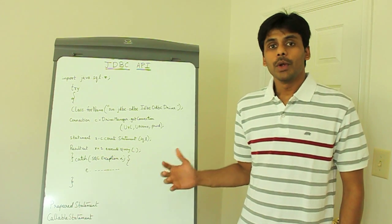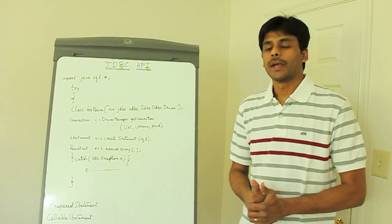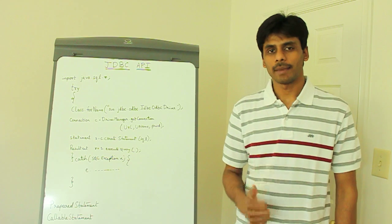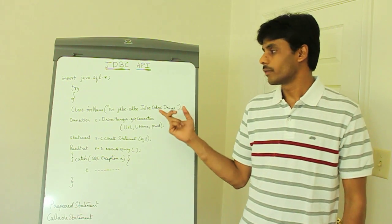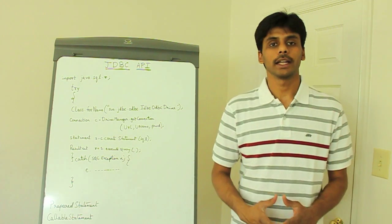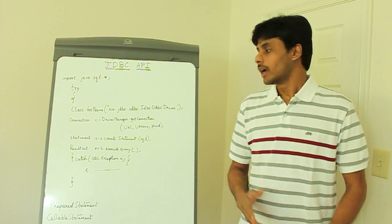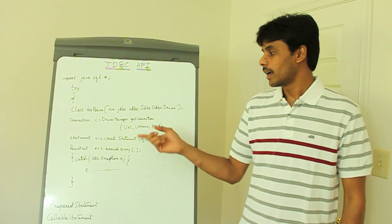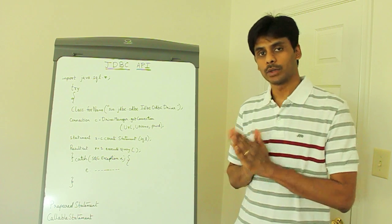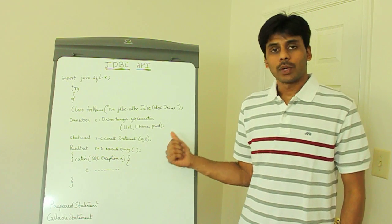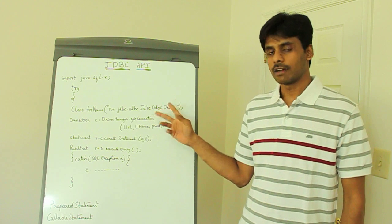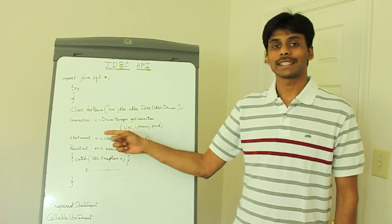To summarize: you now know how to connect to a database and execute SQL statements from within your Java application using the JDBC API. The first thing we do is load the JDBC driver into memory, which causes it to register itself with the DriverManager class. We then invoke the getConnection method on the DriverManager, passing in the database URL and username and password, and the DriverManager uses the registered driver to create a Connection object.